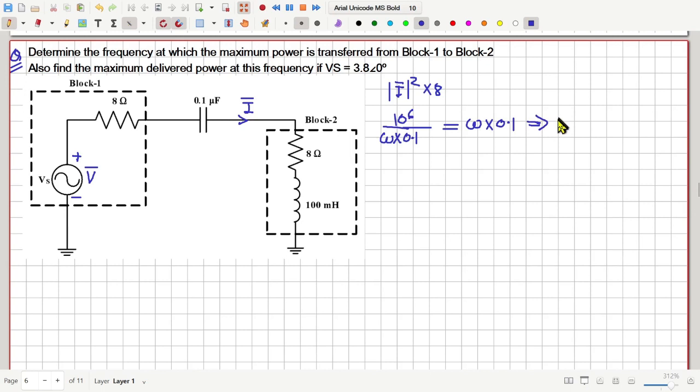And this implies that omega squared will be equal to 10 to the power 8. That means omega is 10,000 and that means the frequency in hertz, that will be 10,000 by 2 pi. That is the answer of the first part of this question.